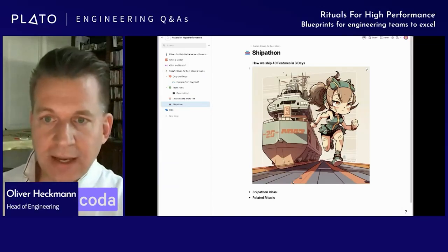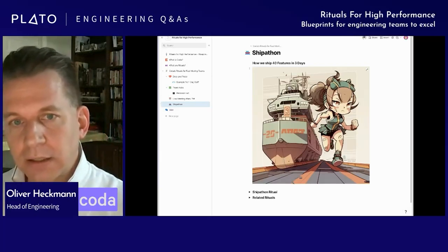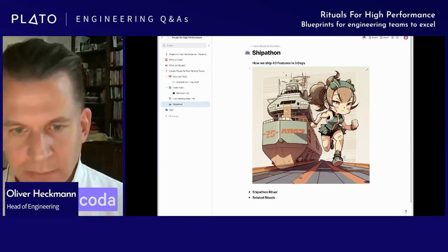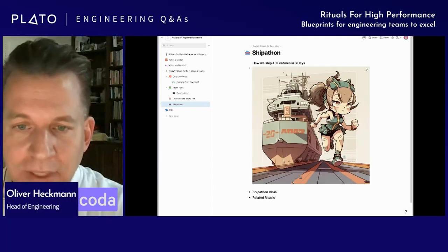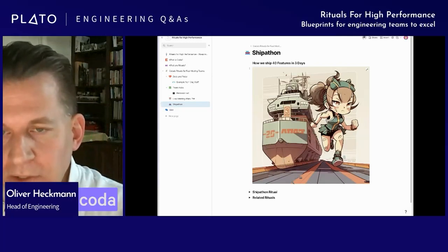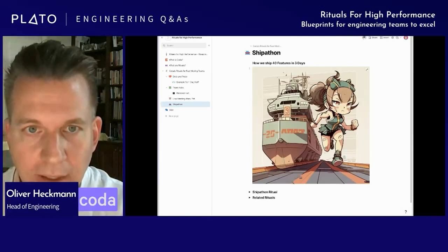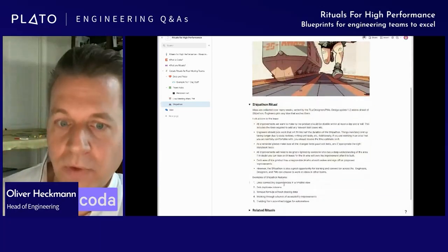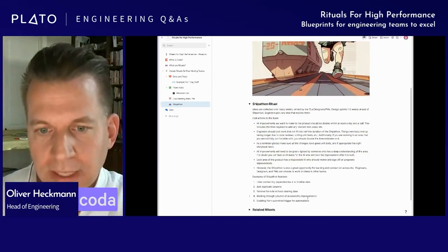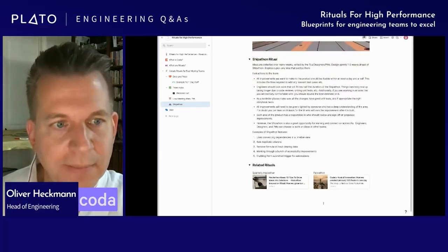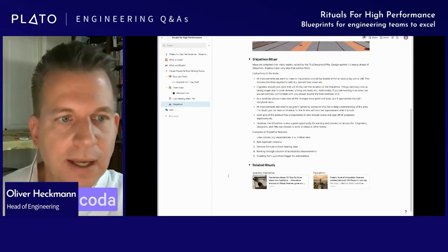For the Shipathon itself, engineers take half a week where they drop their main project and pick from the list of ideas — typically the ones they put there themselves, but they can pick anything. They have three days to build the feature, write the tests, and ship it. The last time we ran it, we had slightly under 30 engineers participating and built 40 features in three days — some of them quite significant, really good strong features. We have other related rituals as well, like a hackathon and a packathon.